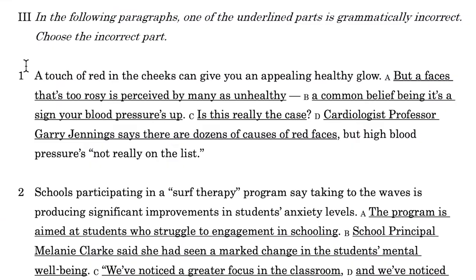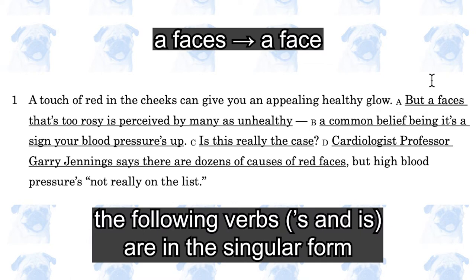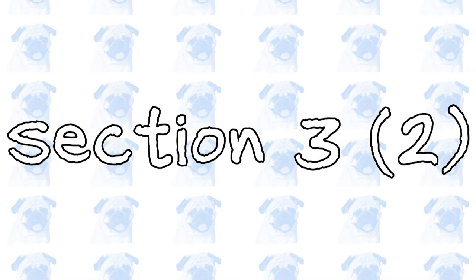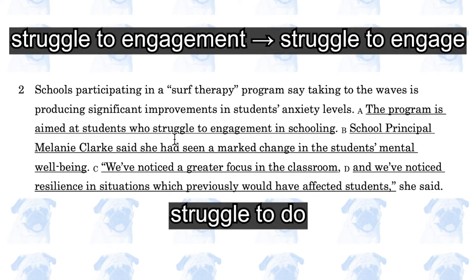In this section, we need to identify a grammatical mistake and then correct it. Number 1: it should be 'a face,' not 'a faces,' because if it were plural it would violate the number agreement. Number 2: the program is aimed at students who struggle to engagement — it should be 'struggle to engage,' because 'to' is not a preposition and cannot be followed by a noun; it needs to be followed by the infinitive form of a verb.